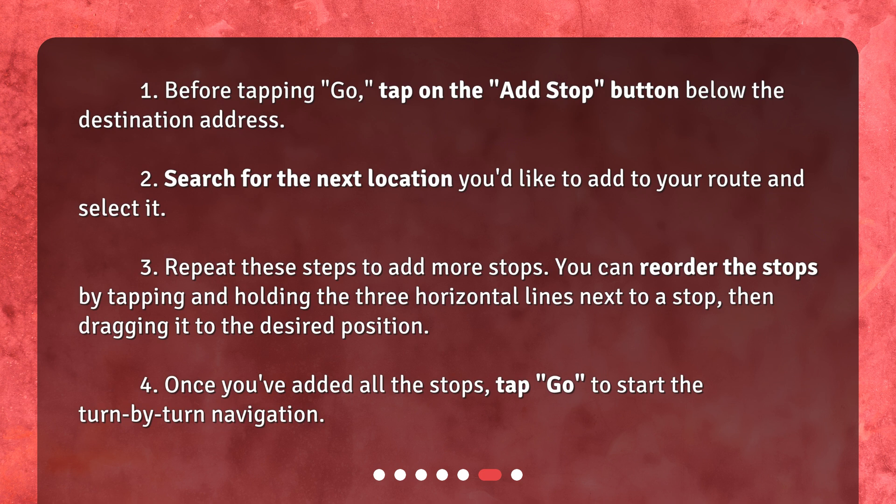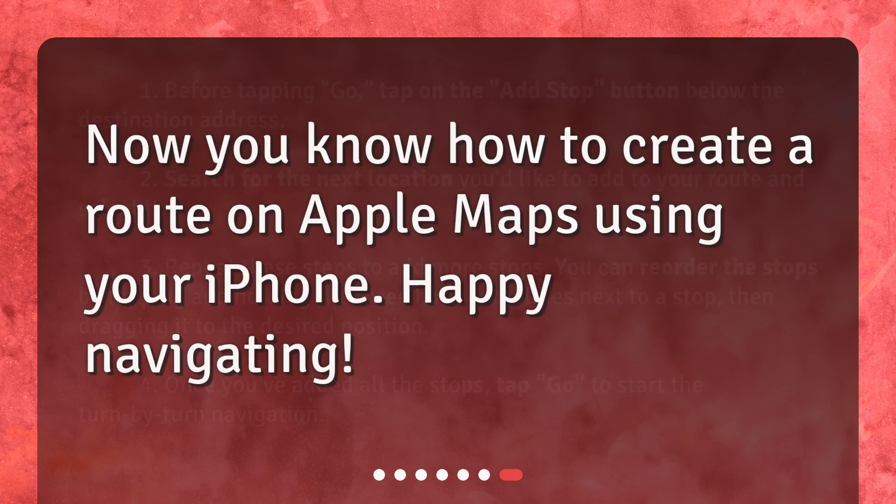4. Once you've added all the stops, tap Go to start the turn-by-turn navigation. 5. Now you know how to create a route on Apple Maps using your iPhone. Happy Navigating!